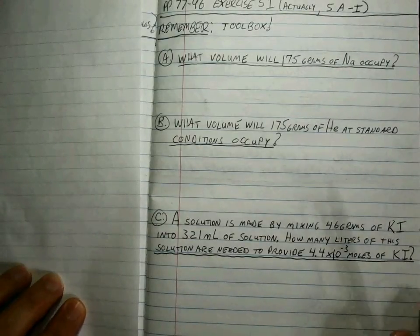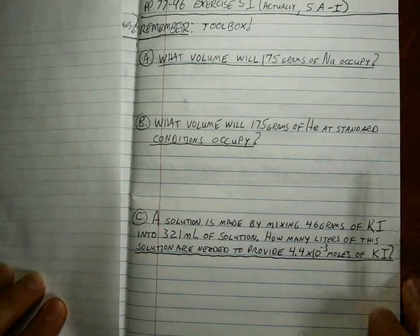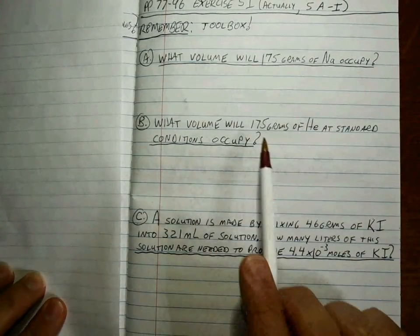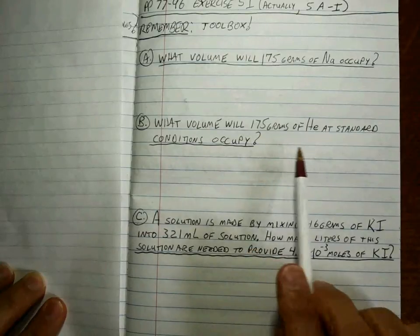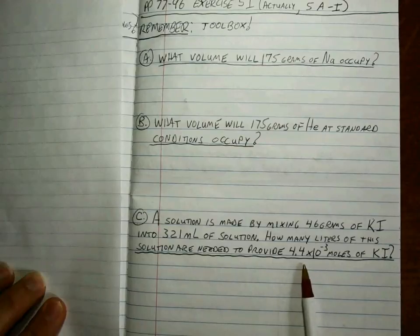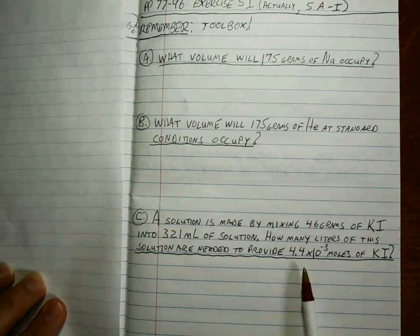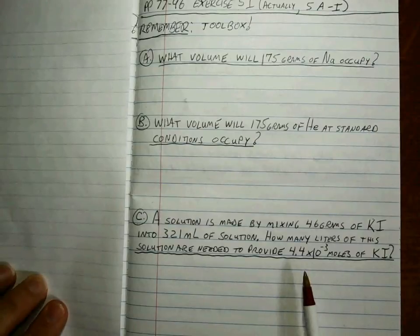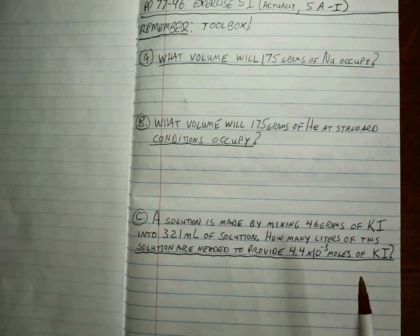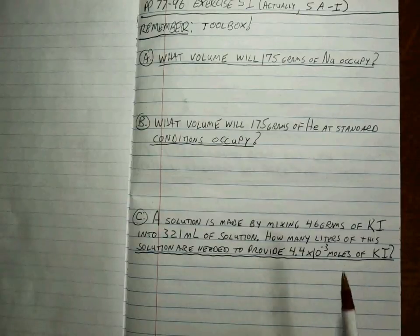Let's see how specific. I've got four of them ready for you to try. Here are the first three: What volume will 175 grams of sodium occupy? Second is what volume will 175 grams of helium at standard conditions occupy? Here's the third question. If you can do these, you will be ready because this is just about any kind of possibility for any kind of problem.